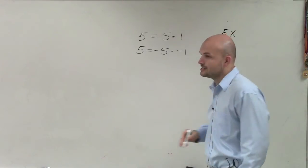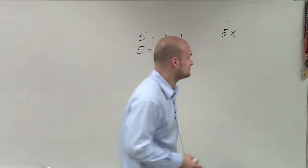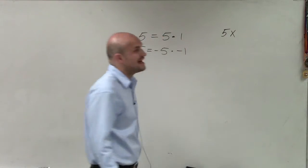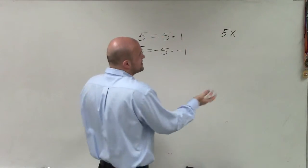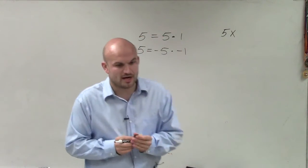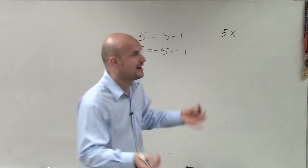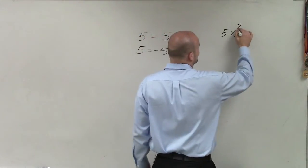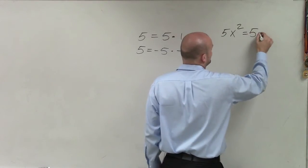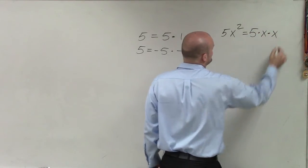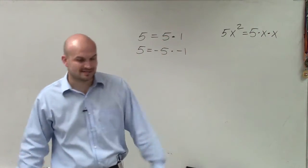Then what we start doing is we start adding in some variables. And if I look into factoring a 5x, there's a lot of different ways to break that up as 5 times x and so forth. And even breaking down 5x squared, we could say, well, that's 5 times x times x. I can rewrite that as a product.